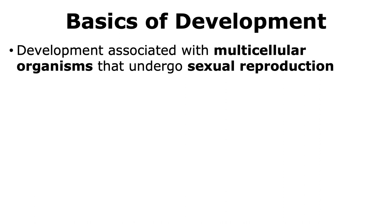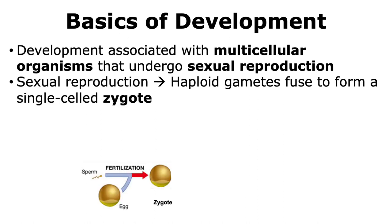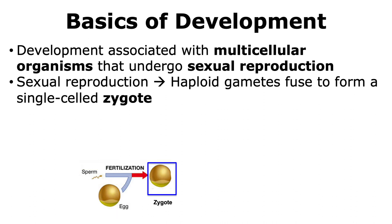Development is associated with multicellular organisms that undergo sexual reproduction. During sexual reproduction, haploid gametes are formed, and these haploid gametes fuse to form a single-celled organism that is diploid, which is called the zygote. In the figure, we have the egg and the sperms, which are the haploid gametes. They fuse through the process called fertilization to form a single-celled diploid organism called a zygote.